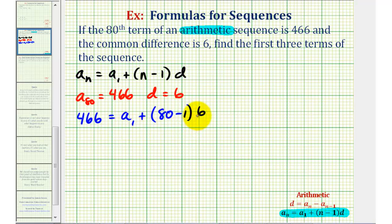Now we'll solve this for a sub one which will give us the first term, and it also gives us enough information to find our formula for the sequence. So we have 466 equals a sub one plus 79 times six is equal to 474.